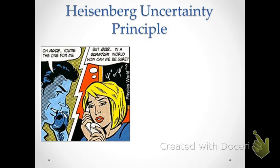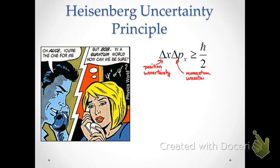In the Heisenberg Uncertainty Principle, this is the basic principle first elucidated by Werner Heisenberg in his exploration of quantum mechanics at the outset. We have a principle that relates the uncertainty in position measurements, represented by delta x, and momentum. The product of the uncertainty in position delta x and the uncertainty in momentum delta p must be greater than or equal to h-bar over 2.